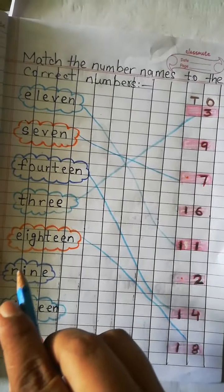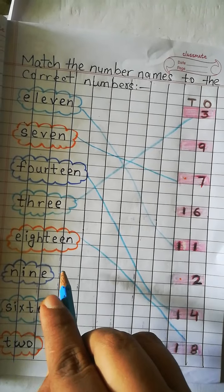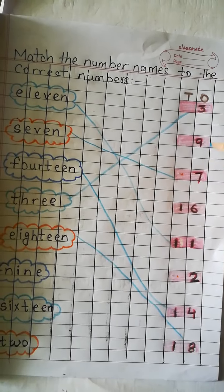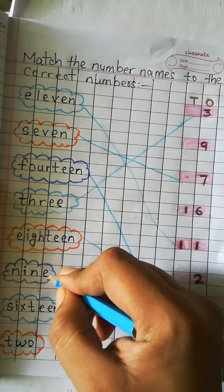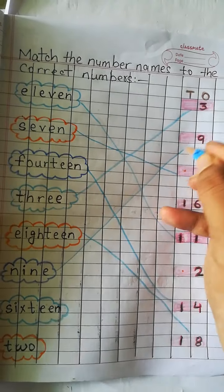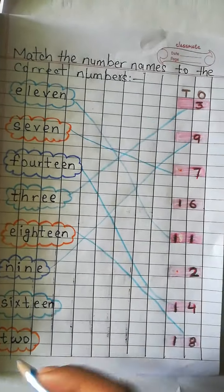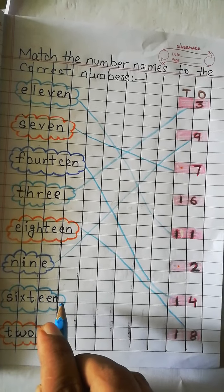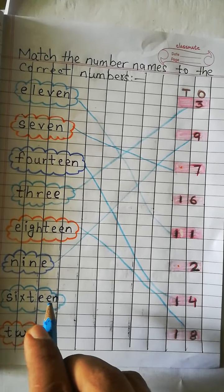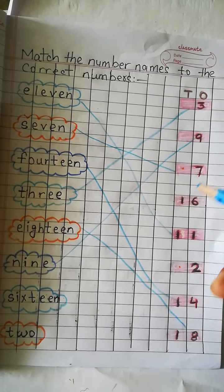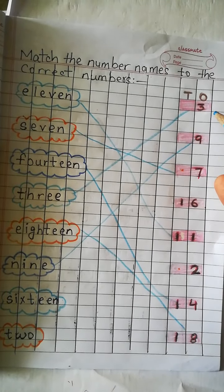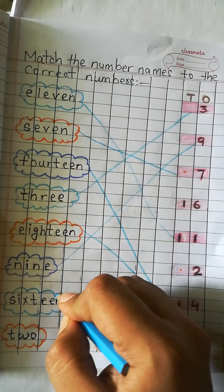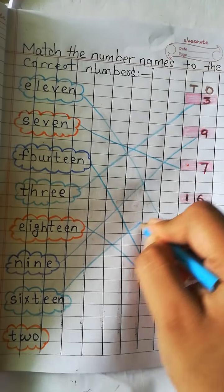Now, NINE — N-I-N-E — 9. Let's find 9. Number 3, and here is number 9. Let's match. Now, SIXTEEN — S-I-X-T-E-E-N — 16. Let's find number 16. And here is number 16. Let's match them.